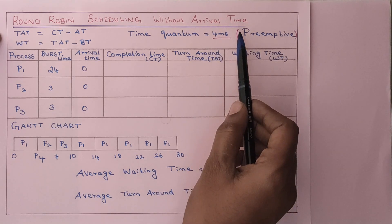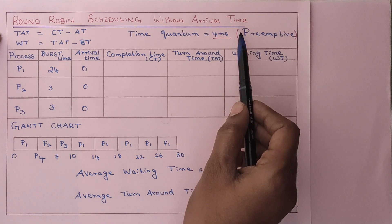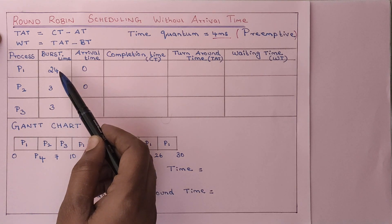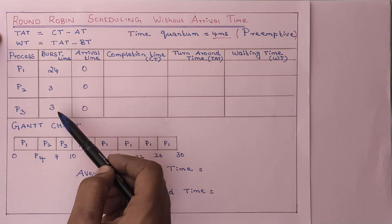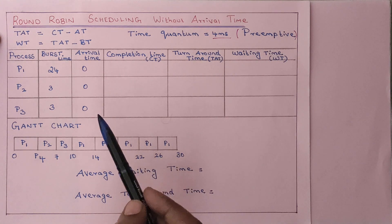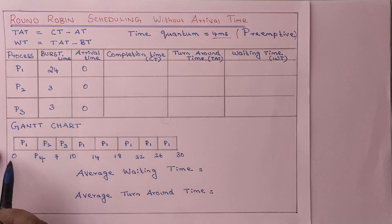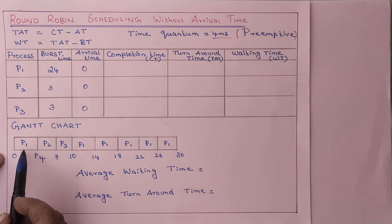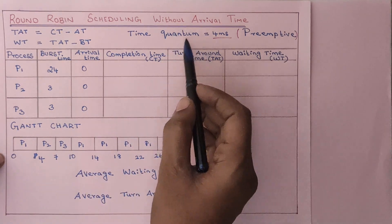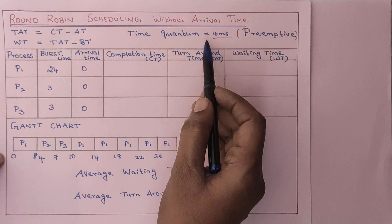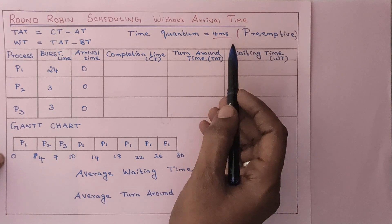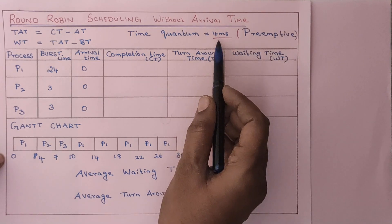In this example, we are discussing round robin scheduling without consideration of arrival time, which means all processes arrive at 0 milliseconds. We are considering three processes: P1, P2, and P3, with burst times of 24, 3, and 3 milliseconds respectively, and all processes arrive at 0 milliseconds. Now we will discuss how to draw a Gantt chart. At 0 milliseconds, process P1 arrives. The time quantum is a very important factor in round robin scheduling. In this example, I am considering time quantum as 4 milliseconds.